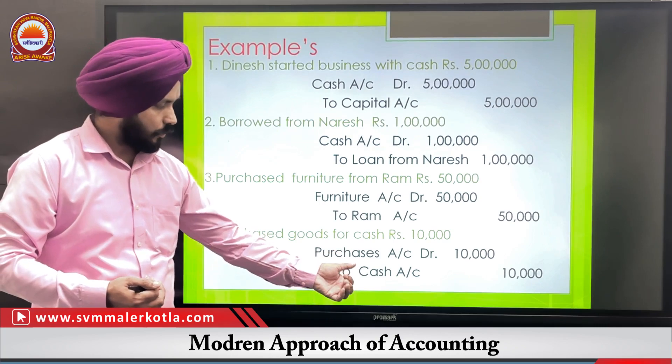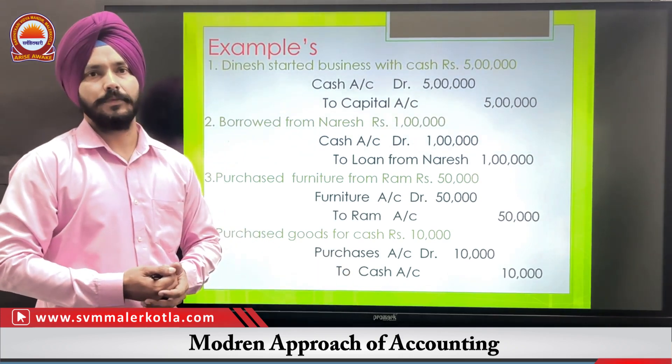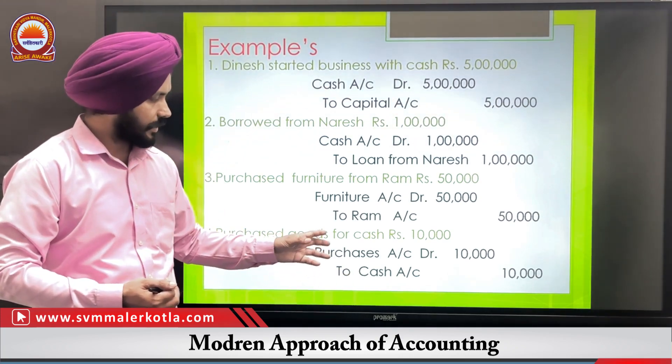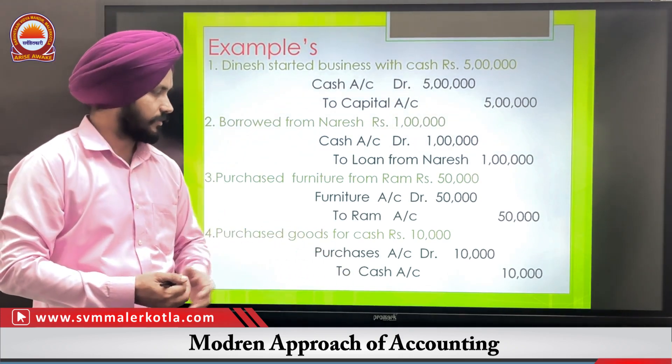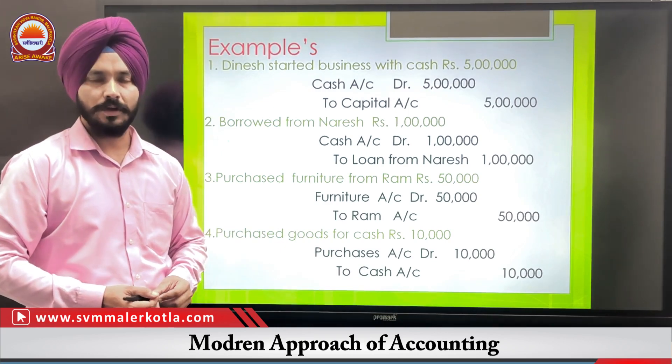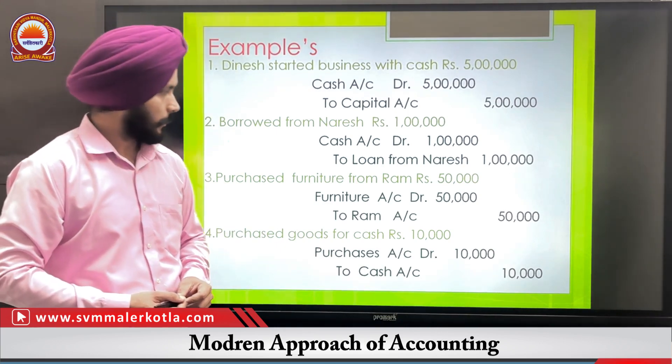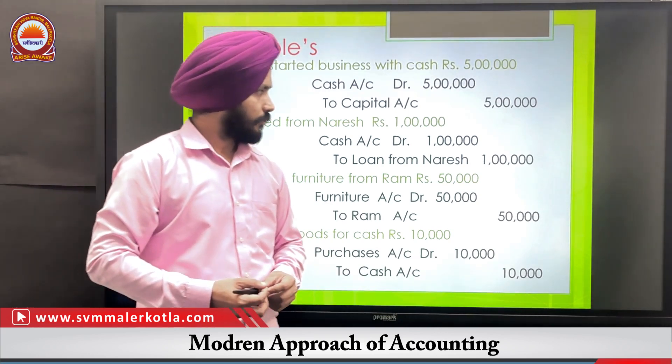Fourth example: Purchased goods for cash rupees ten thousand. Purchase is an expense and cash is an asset. Increase in expenses is debited; decrease in asset is credited. Therefore, the entry is: Cash Purchase Account Debit to Cash Account. I hope this topic is clear, thank you.